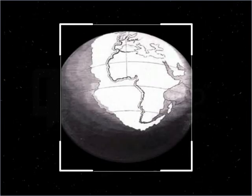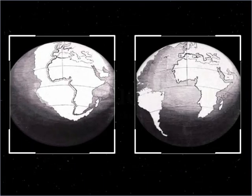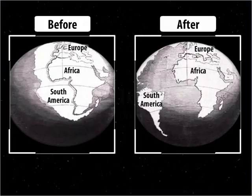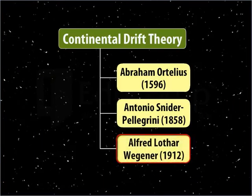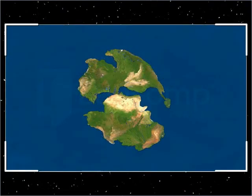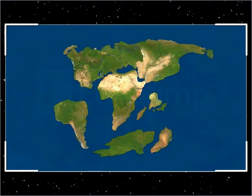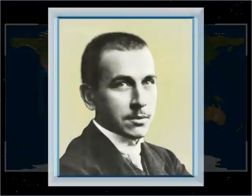Later in 1858, Antonio Snyder-Pellegrini proposed that all of the continents were once connected together. To show that, he drew a map showing the three continents together and compared it with the map of the current positions of the continents. Thus, the before and after maps of South America and Africa, made by Pellegrini, give a clear picture of the theory of continents drifting apart.